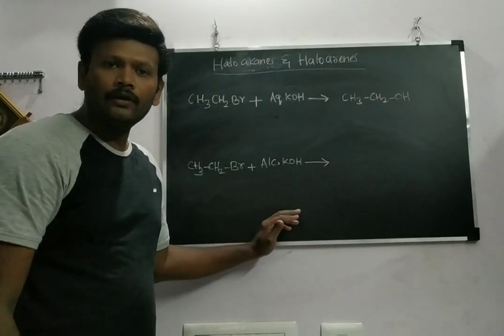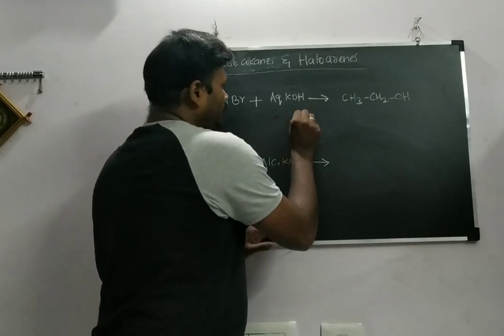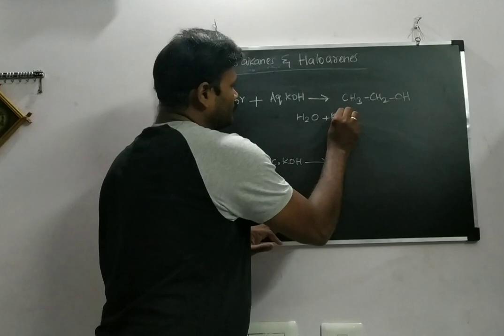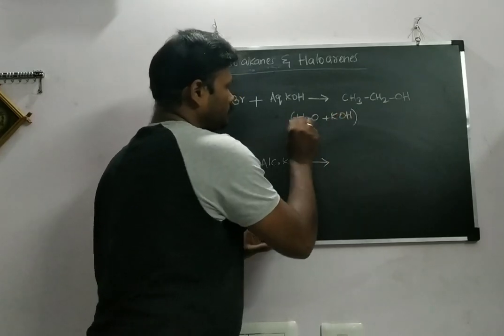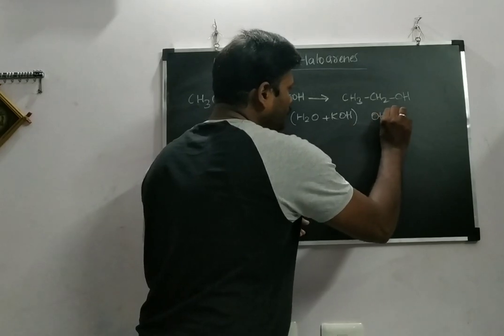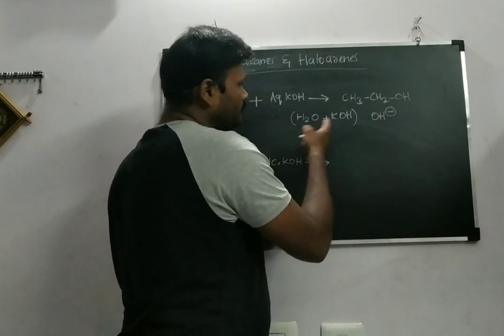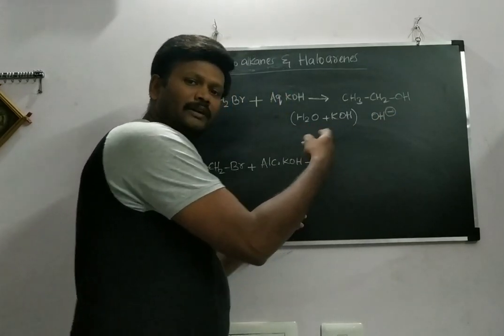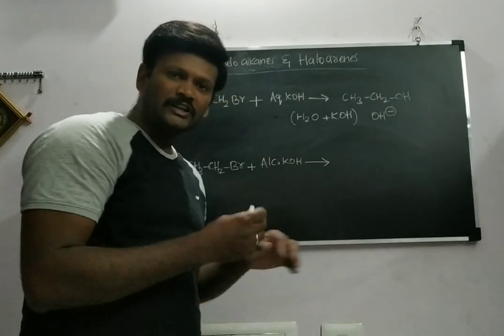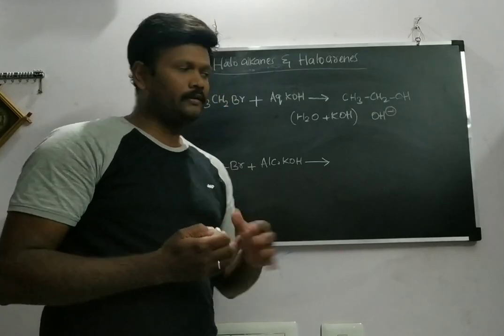Why am I getting alcohol? Because in aqueous KOH, the KOH is dissolved in water. Now the OH- is dissolved in water, which means dilution will take place. This will not be acting preferentially as a base; it preferentially acts as a nucleophile.